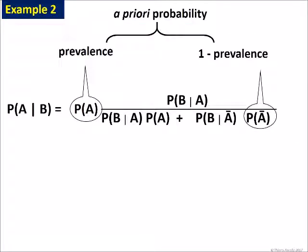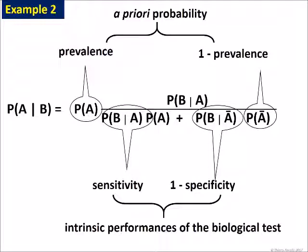Now, in our example, we know all the values of the right term. We know the prevalence P of A and its inverse P of not A. We know P of B given A, which is the sensitivity of the test. P of B given not A is the probability of false positive, so it is 1 minus the specificity. Sensitivity and specificity are intrinsic qualities of the test that we know because they are displayed by the test's manufacturer.